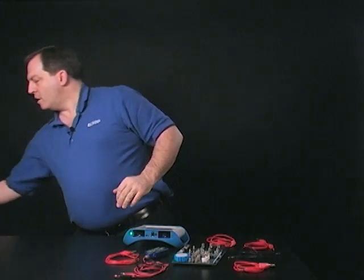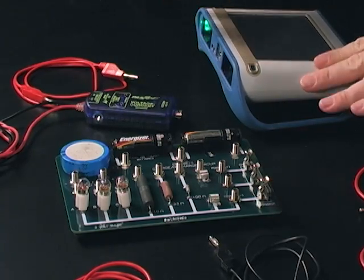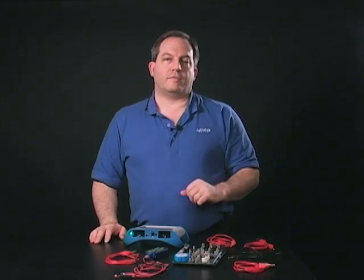To do the lab we're going to need a few things. We're going to need an interface, a voltage current sensor, we're using a charge-discharge board, and an assortment of patch cords to put it all together. So let's do that.